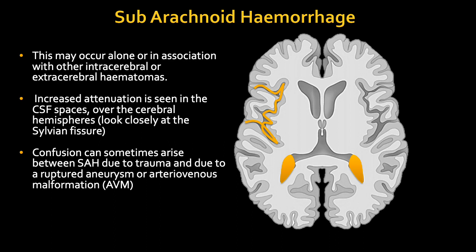Traumatic subarachnoid hemorrhage occurs most commonly over the cerebral convexities or adjacent to otherwise injured brain. If there is a large amount of subarachnoid hemorrhage, particularly in the basilar cisterns, the physician, radiologist, or radiographer should consider that there could be an aneurysm that has burst. On CT it appears as focal high density in the sulci and fissures, or linear hyperdensities in the cerebral sulci. If these are suspected, proceed with a circle of Willis angiogram or carotid and circle of Willis CTA.